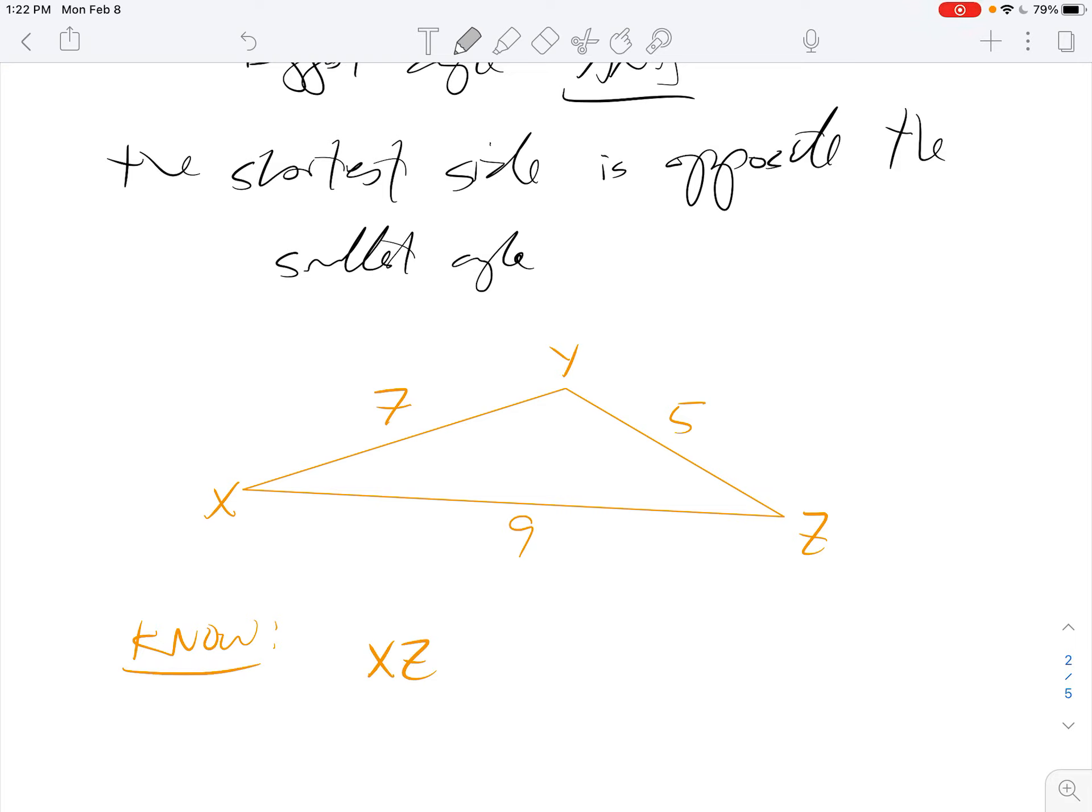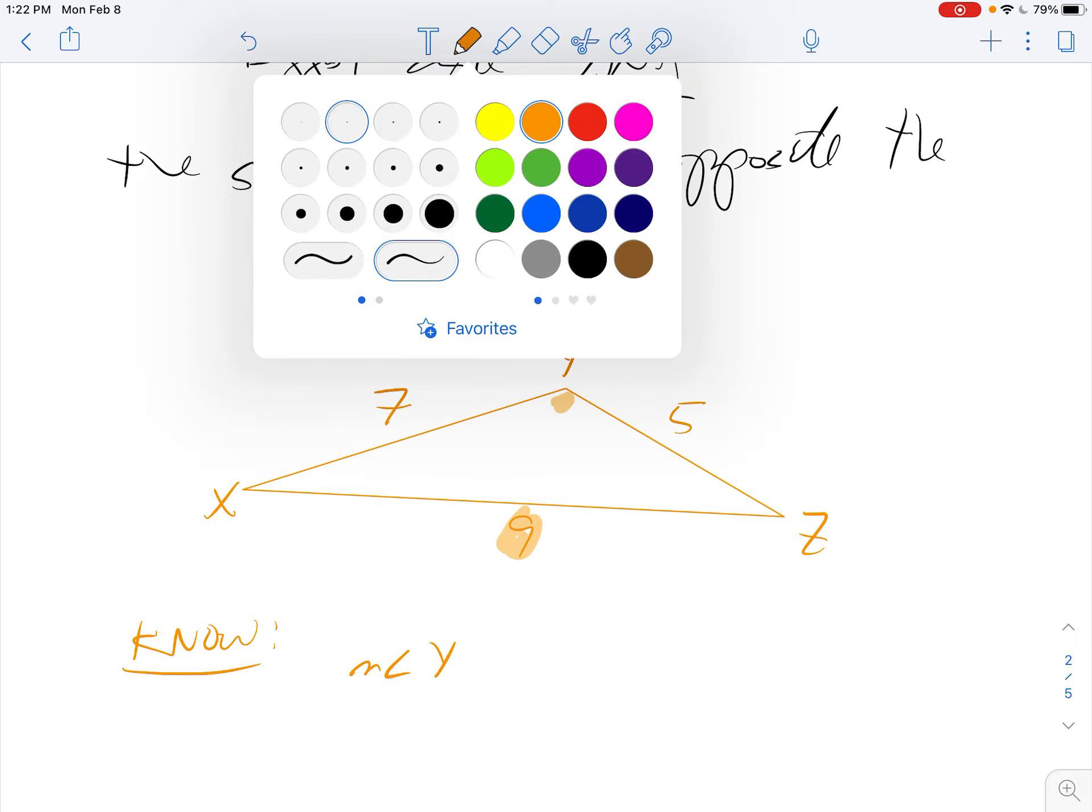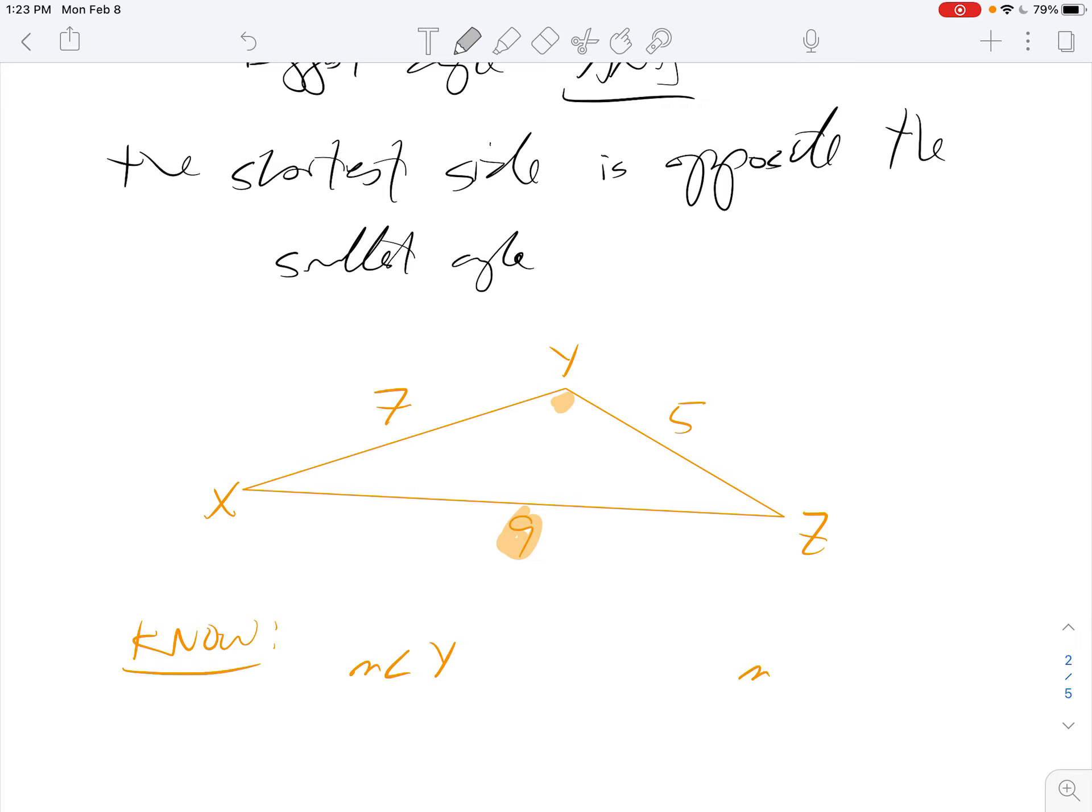Oh, sorry. Well, we already see that. What we would know is that the biggest angle is opposite the longest side. The smallest angle is opposite the smallest side. And then by process of elimination, the middle angle is opposite the middle side.